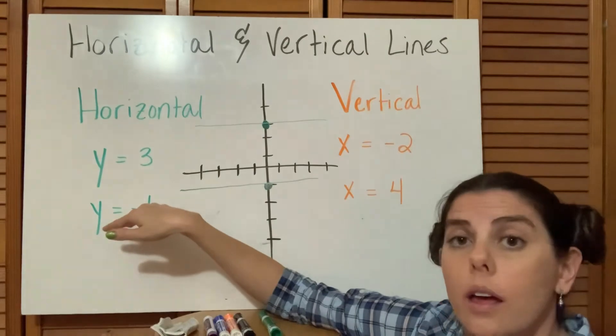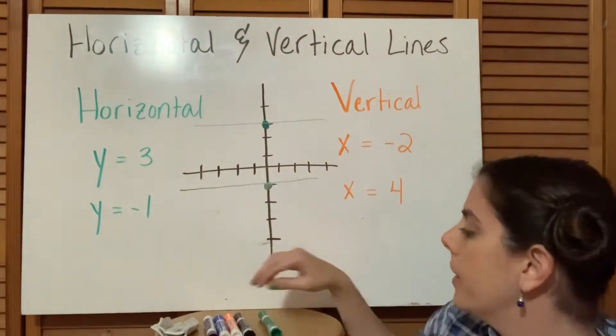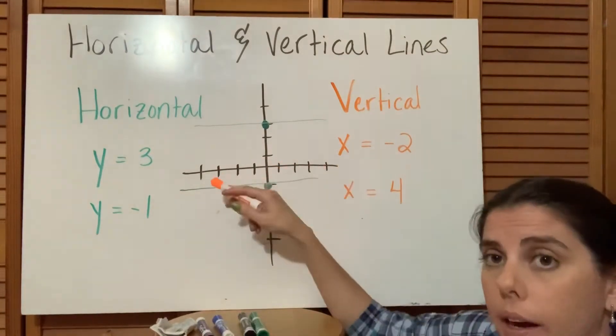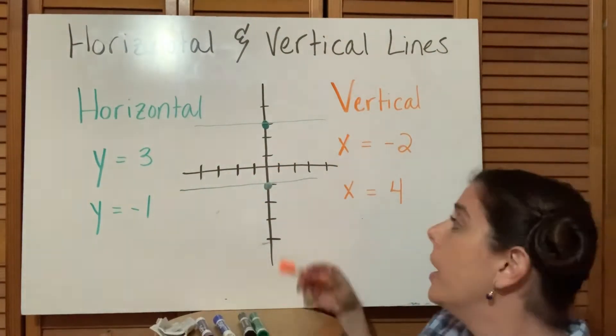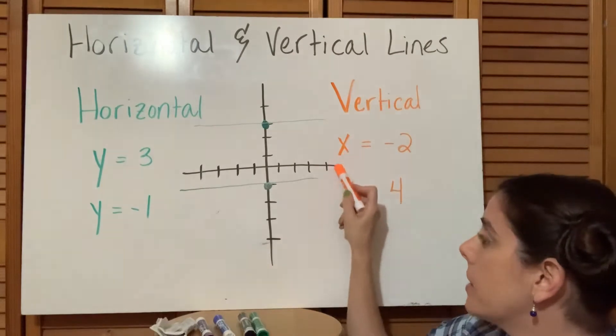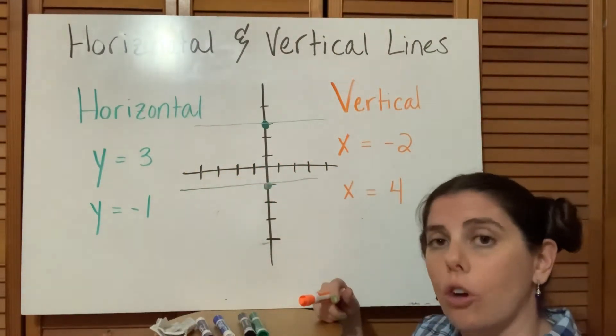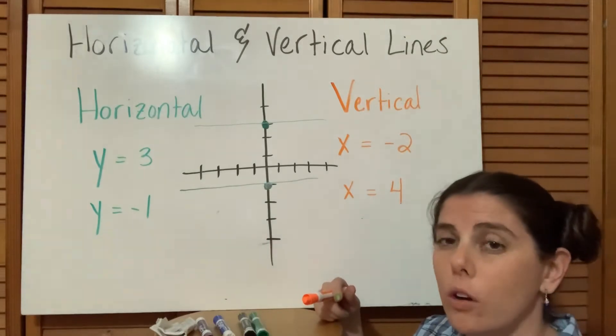The same is true with our vertical lines, only this time the x tells us we're going to be dealing with the x-axis. So the opposite is true - because we're dealing with the x-axis, the x-axis runs horizontally, for a line to cross it that doesn't have a slope involved it would have to be vertical.